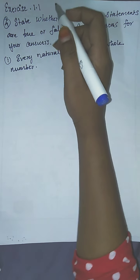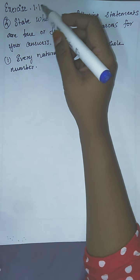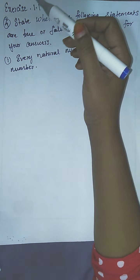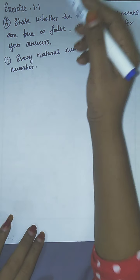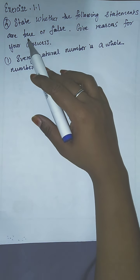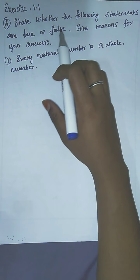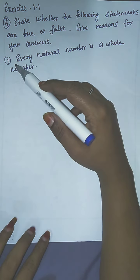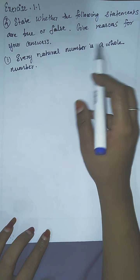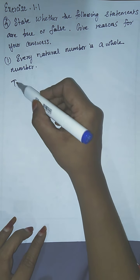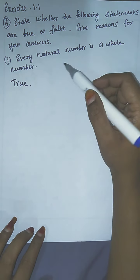Hi everyone, welcome to Learn Easy Max. This is exercise 1.1, problem number 4 from chapter 1. They have given some statements and asked whether they are true or false, and you have to give the reason for your answer. The first statement is: every natural number is a whole number. The answer is true.